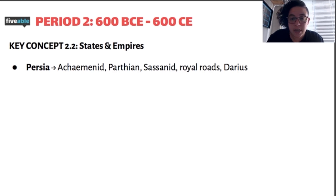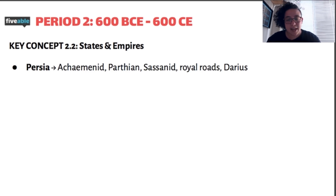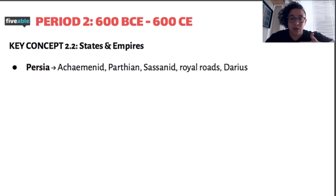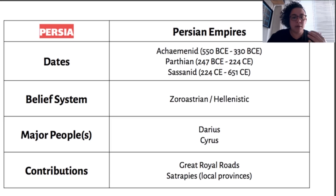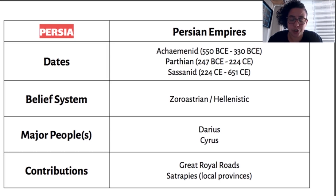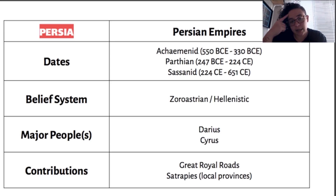In Persia, they had actually a couple of different empires: the Achaemenid, the Parthian, and the Sassanid. Another important key term is the Royal Roads — that's important because it shows how Persia connected itself. If you're expanding your empire, how do you get a message across? How do you trade? How do you share resources? Royal Roads is how they did it. Their major belief system was called Zoroastrianism, which is an early form of monotheism, somewhat similar to Christianity. Major people to know include Darius and Cyrus.